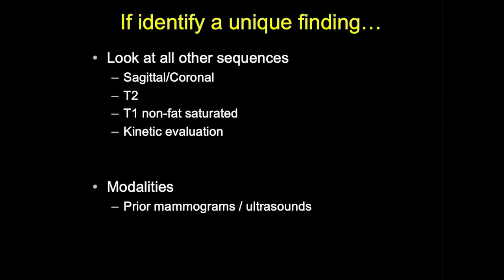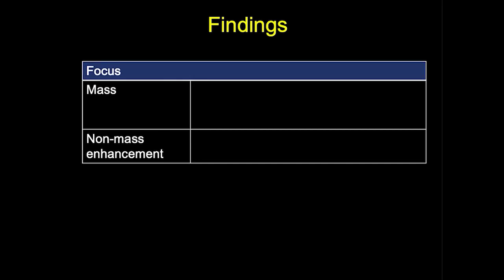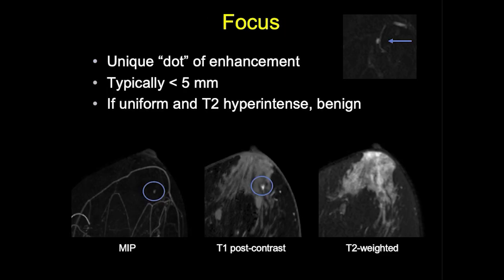First, in looking at findings, we need to identify if a finding is real and unique, taking advantage of all sequences including sagittal, coronal, T2, T1 non-fat saturated, and sometimes kinetic evaluation. Prior imaging can also be helpful to identify stable correlates on prior mammograms or ultrasound. There are three main types of MRI findings: focus, mass, and non-mass enhancement. A focus is a unique dot of enhancement typically less than five millimeters — too small to characterize as a mass or non-mass enhancement. If it is uniform and T2 hyperintense, it is generally benign. If there are similar foci throughout both breasts, it likely represents background parenchymal enhancement.